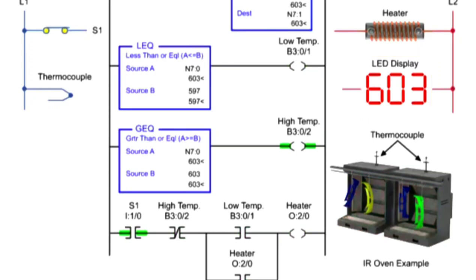To control the circuit, S1 is programmed in the heater output circuit. A thermocouple addressed to the move instructions provides an analog value of the temperature. The temperature is moved from the source to the destination when S1 is activated and is displayed on the LED panel.